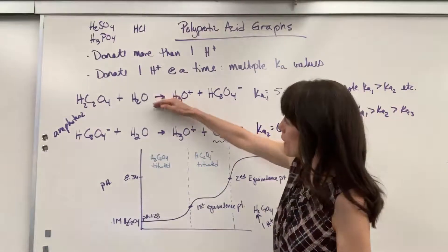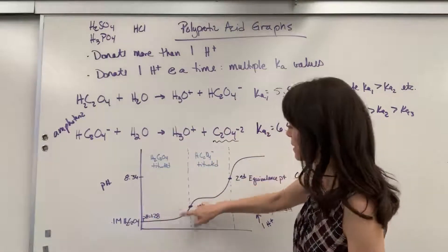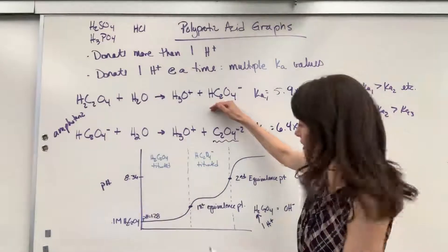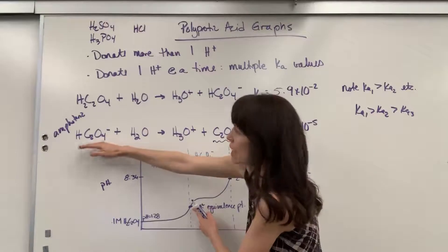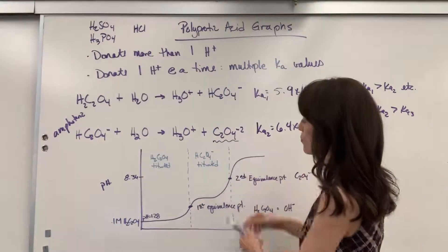So at that 8.36, all I have left is this right here. So if I take it back up here to my equations, this first titration happens right there. And at this point, all I have is the hydrogen oxalate right there. And now, when I do my second titration, adding hydroxide to this, all I have left is this C2O4.